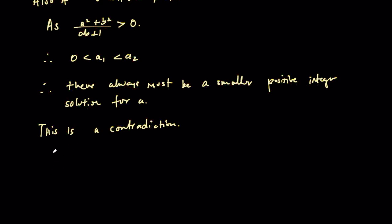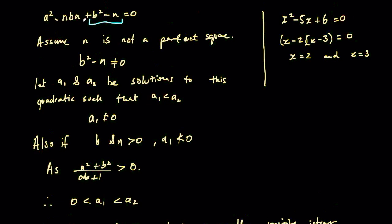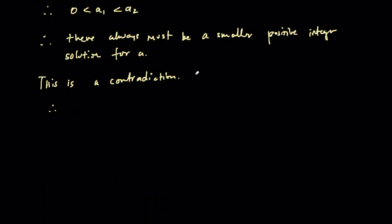And therefore, the only assumption we made was n is not a perfect square. So we can say then because we have a contradiction, n must be a perfect square.